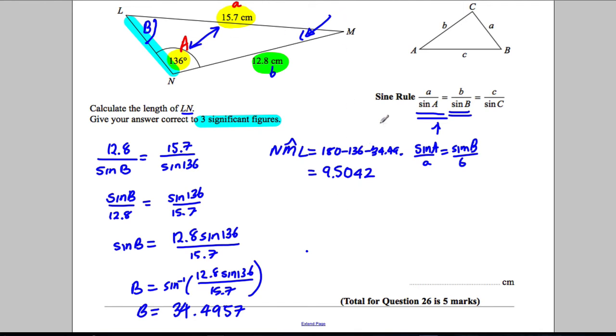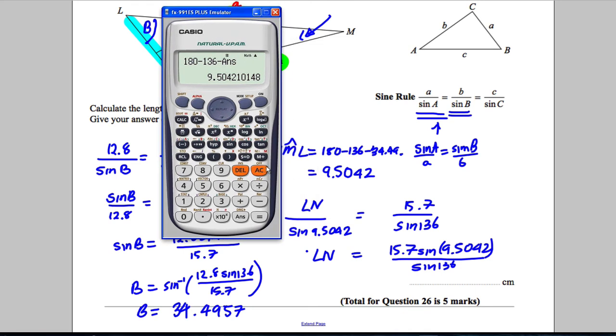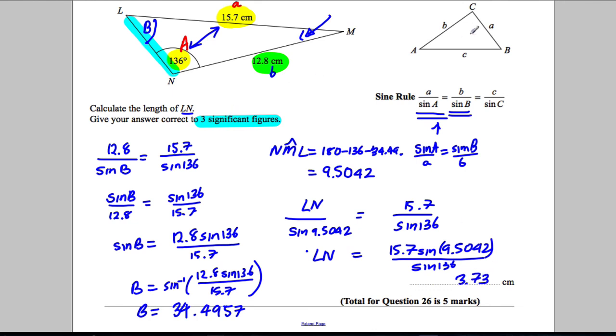So now I can use the sine rule again to work at this side. So LN, that side there, divided by sine of 9.5042 degrees must be equal to 15.7 over sine 136. So LN is going to equal 15.7 sine of 9.5042 all divided by sine of 136. So type that into the calculator - I'm going to type in 15.7 sine of your answer all divided by the sine of 136 close brackets, and I'm getting myself the answer 3.73.